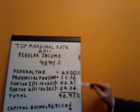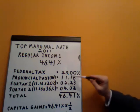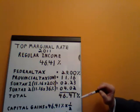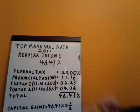Now we have these four numbers: 29%, 11.16%, 2.23%, and 4.02%. That would add up to 46.41%. So however much we have earned above $128,801, we are definitely paying tax in Ontario at a rate of about 46.41%.